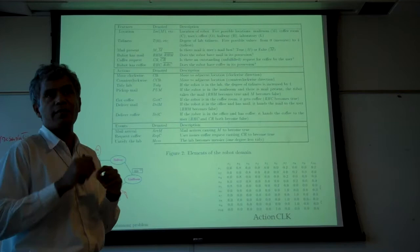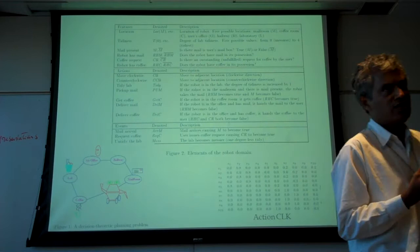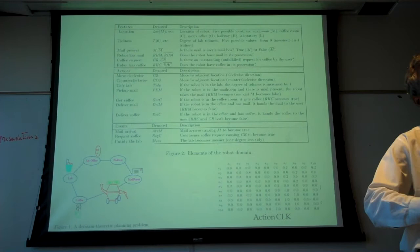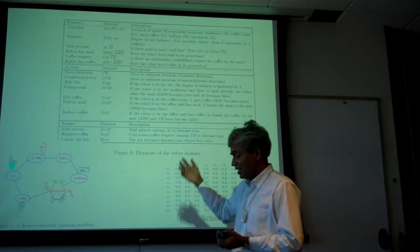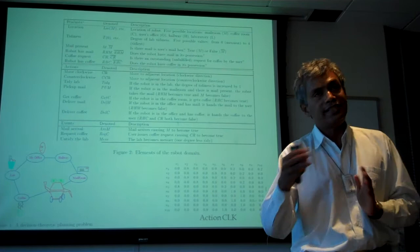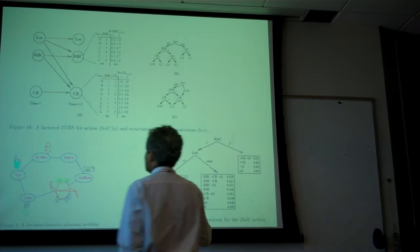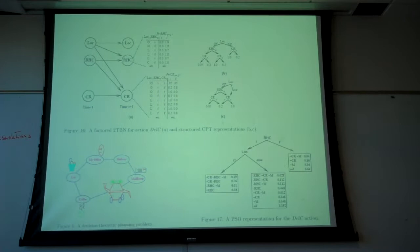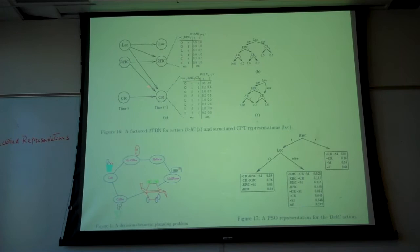This is ultimately what all reasoning with change is about. Situation calculus tells you what is true in the state resulting from doing an action. STRIPS does the same thing. Here it's done in the context of distributions — you say what will be true after an action as a probability distribution over possible values. The deliver coffee action, for example, depends only on and changes only three state variables.